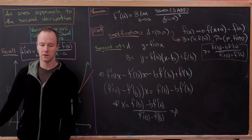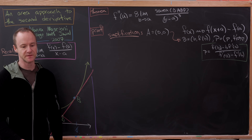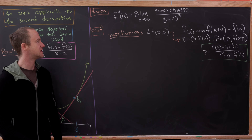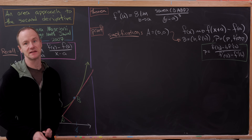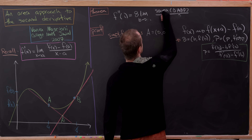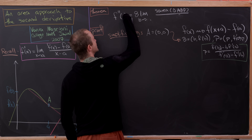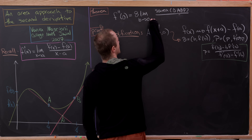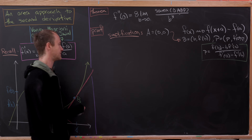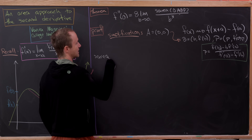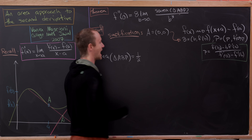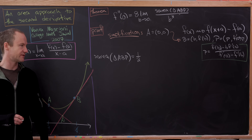Now we're ready to calculate the signed area. We'll then take the limit of that signed area over (b minus a) cubed. Since we assumed little a equals zero, we replace all the little a's with zero. So we're looking for f''(0), meaning we need the limit as b goes to zero, with simply b cubed in the denominator. The signed area of triangle ABP can be calculated as one-half times the determinant of a certain 3×3 matrix.